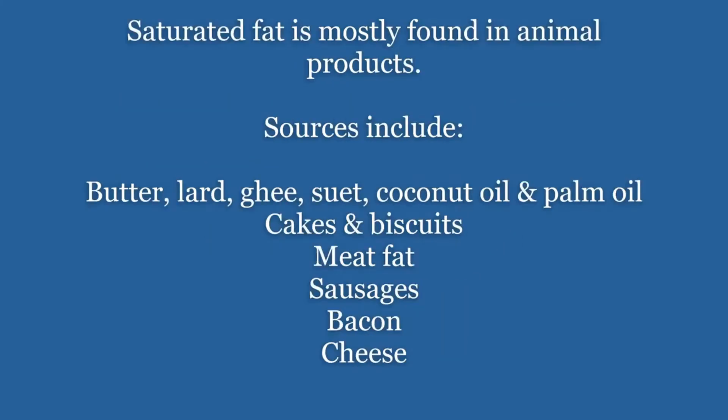Saturated fat is mostly found in animal products. Sources include butter, lard, ghee, and suet, but also non-animal products such as coconut oil and palm oil. Cakes and biscuits also have saturated fat, as well as meat fat, sausages, bacon, and cheese.